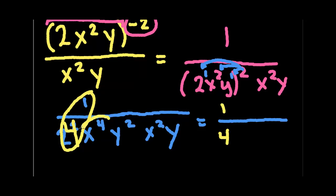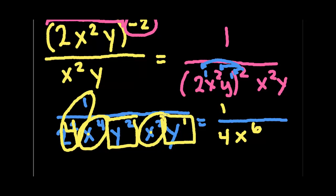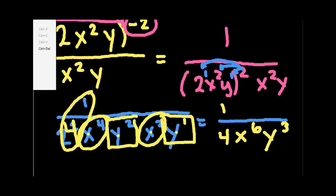Next, we're going to look at our x's. We have an x to the 4th and an x squared. Notice that they're on the same level and they both have a base. So we're going to add the exponents. So this becomes x to the 6th. Then we have a y squared and a y to the 1st. So again, they're on the same level. They both have a base. So we're going to add the exponents. So we get y to the 3rd. So our final answer is 1 over 4x to the 6th, y to the 3rd. Alright, let's try another one.